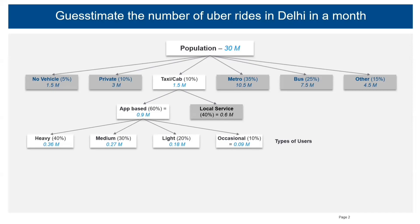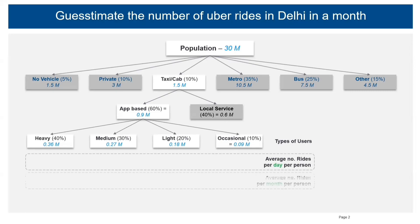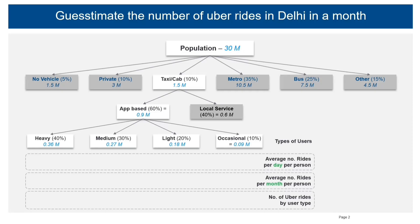Now we're trying to find the number of Uber rides per user type per month. To find that, I'll start with the average number of rides per day per person, then find the average number of rides per month per person, and thereby calculate the number of Uber rides by user type.